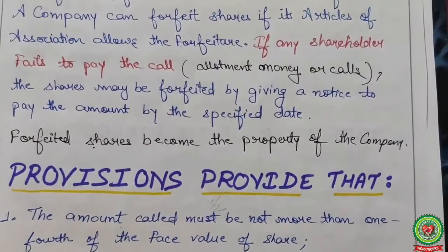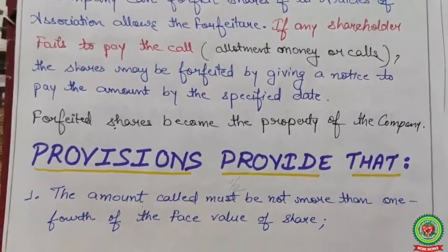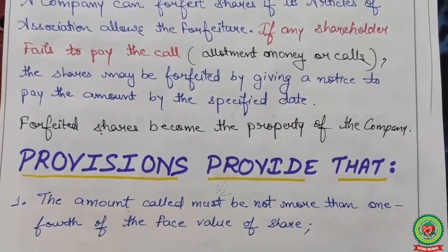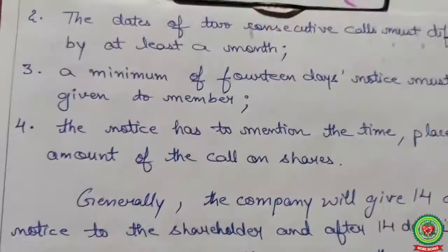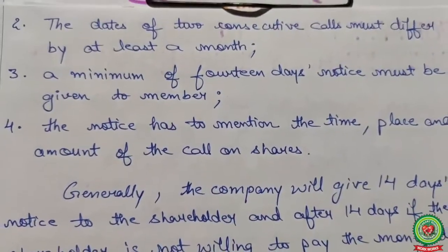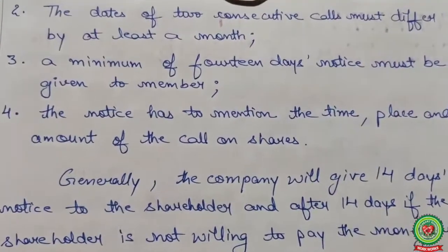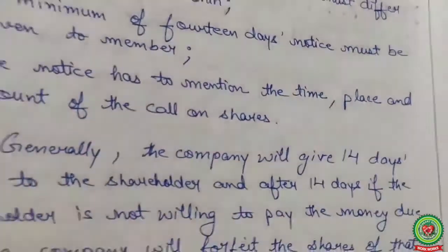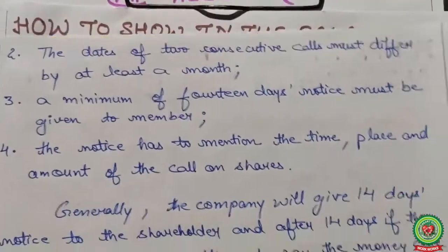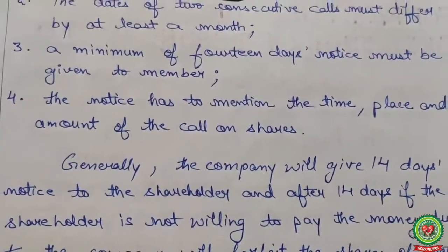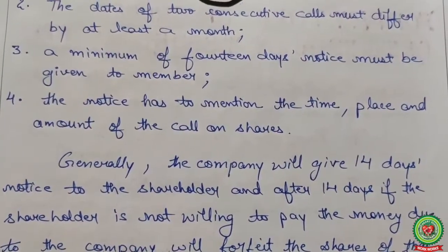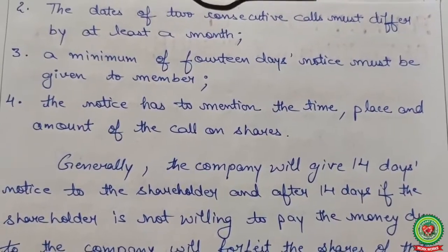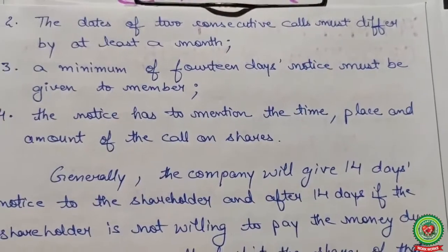Forfeited shares become the property of the company. The provisions state: the amount called must not be more than one-fourth of the face value; the dates of two consecutive calls must differ by at least one month; a minimum of 14 days' notice must be given to the member; and the notice must mention the time, place, and amount of the calls on shares.